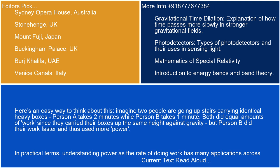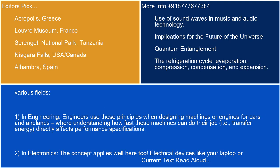In practical terms, understanding power as the rate of doing work has many applications across various fields. In engineering, engineers use these principles when designing machines or engines for cars and airplanes, where understanding how fast these machines can do their job — i.e., transfer energy — directly affects performance specifications.